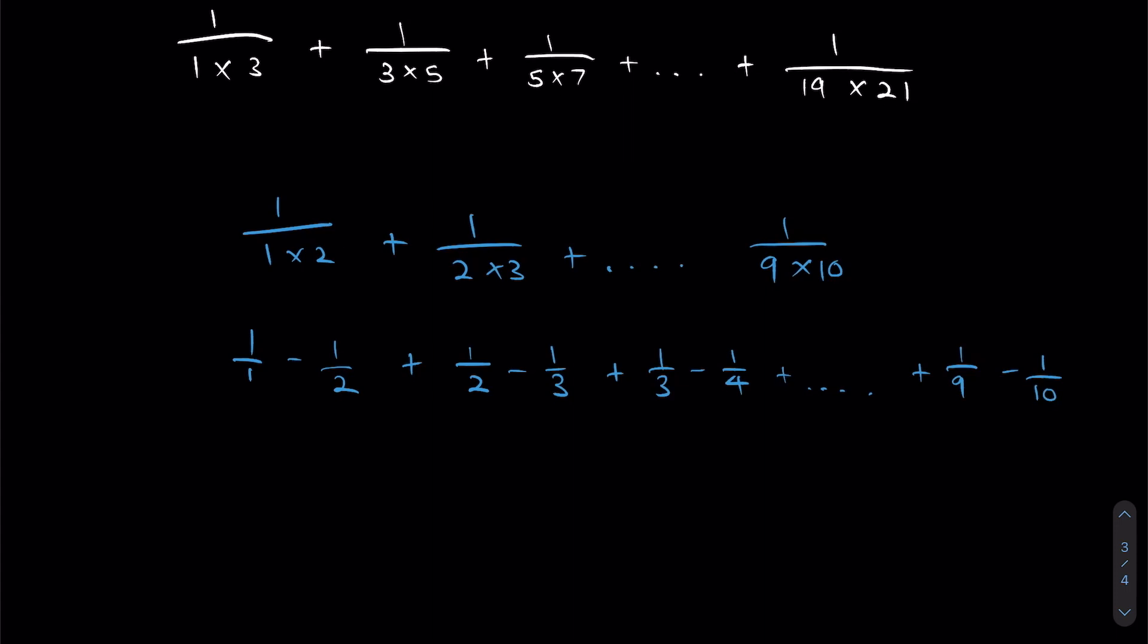Now if you look over here, we see that 1 over 2 repeats itself in plus and minus. So when we see that, what can we do? We can cancel both of them out. Similarly, 1 over 3 also repeats twice. We cancel them out.